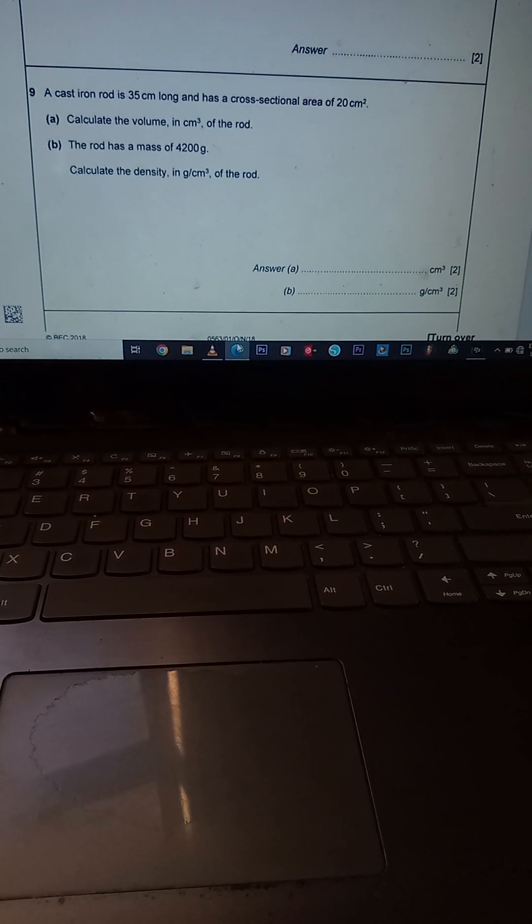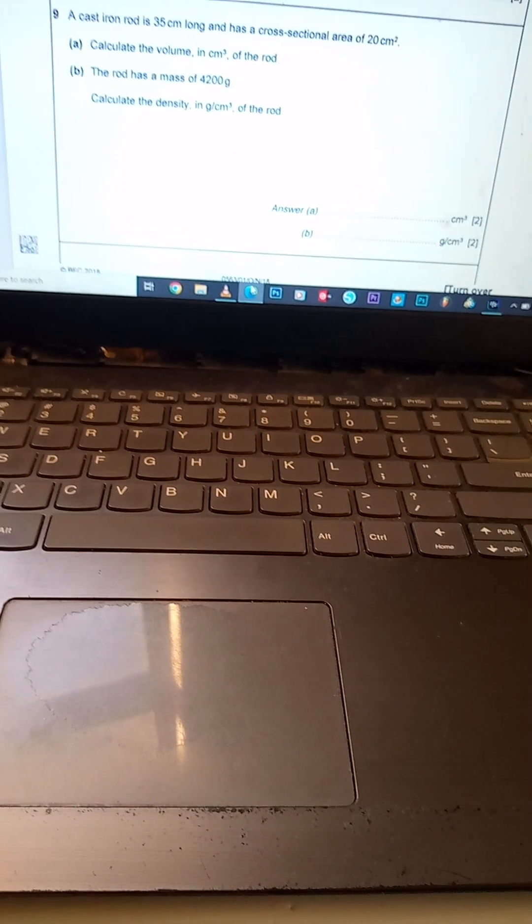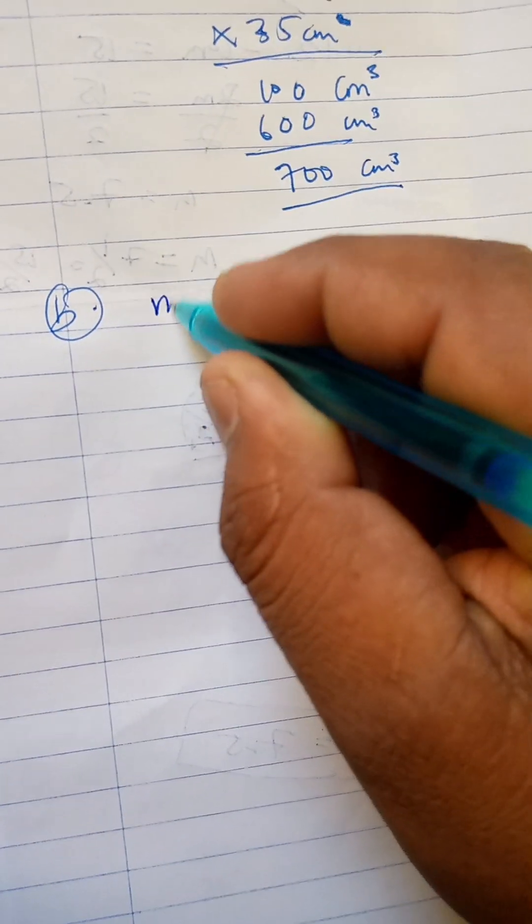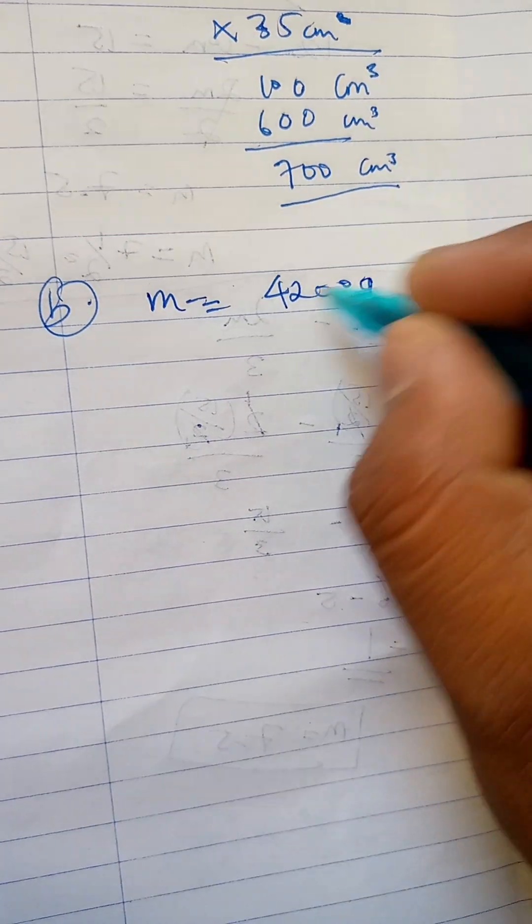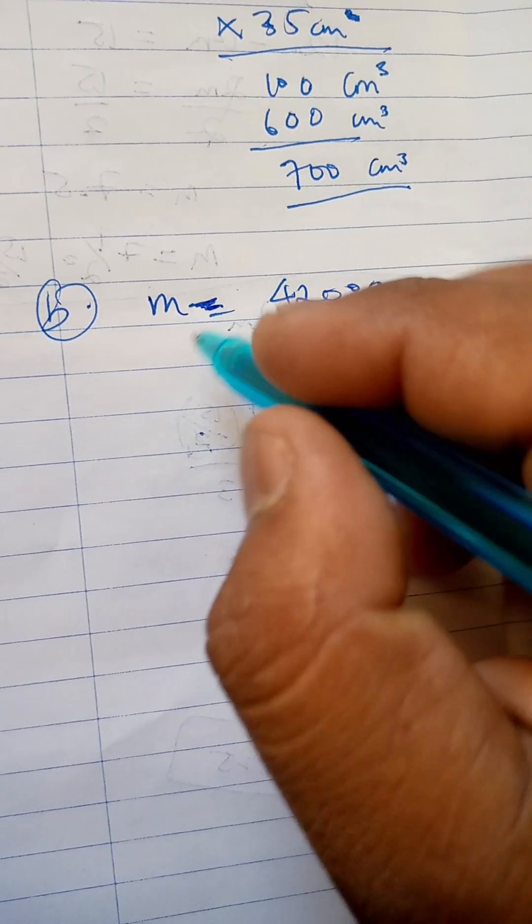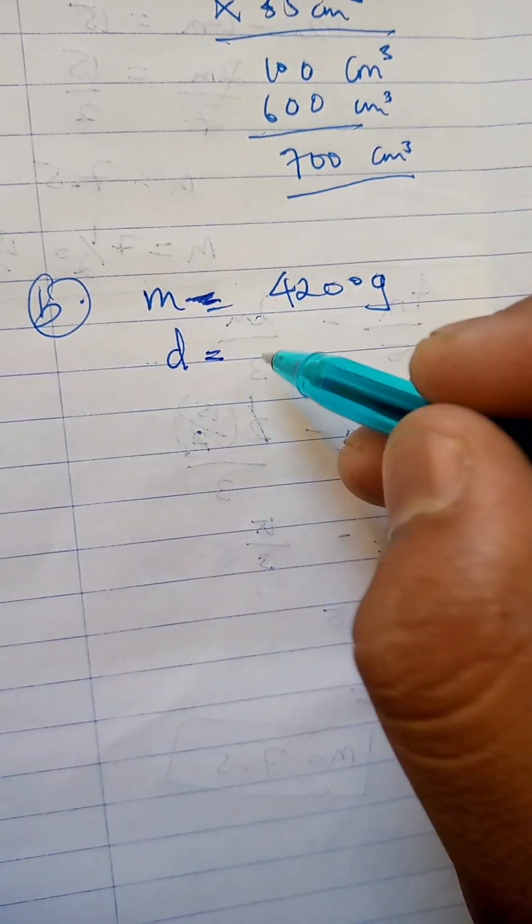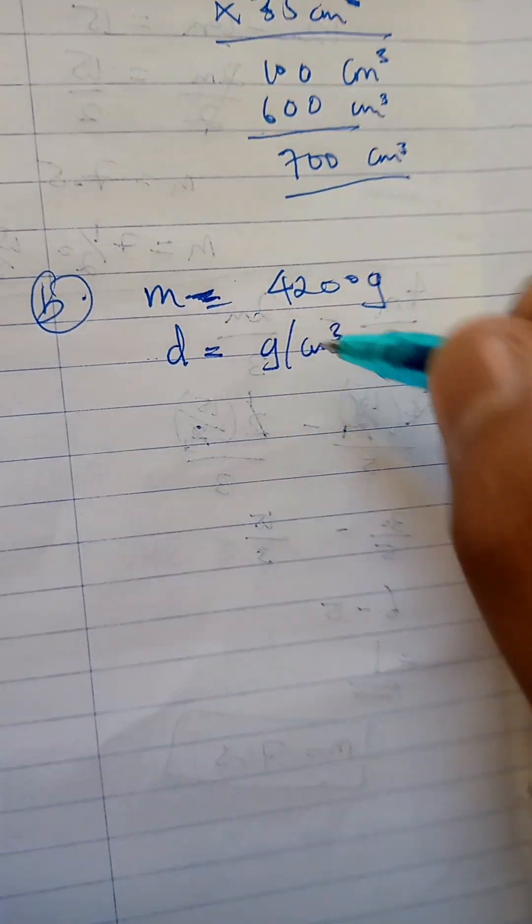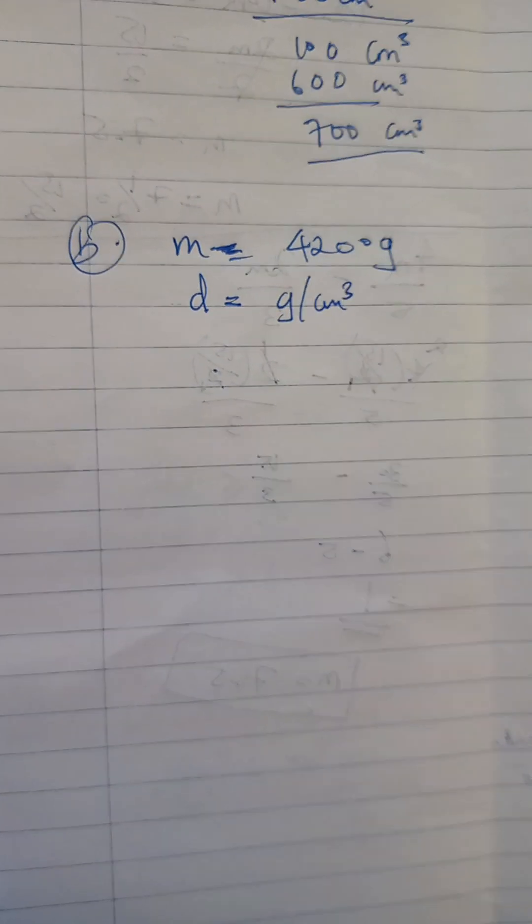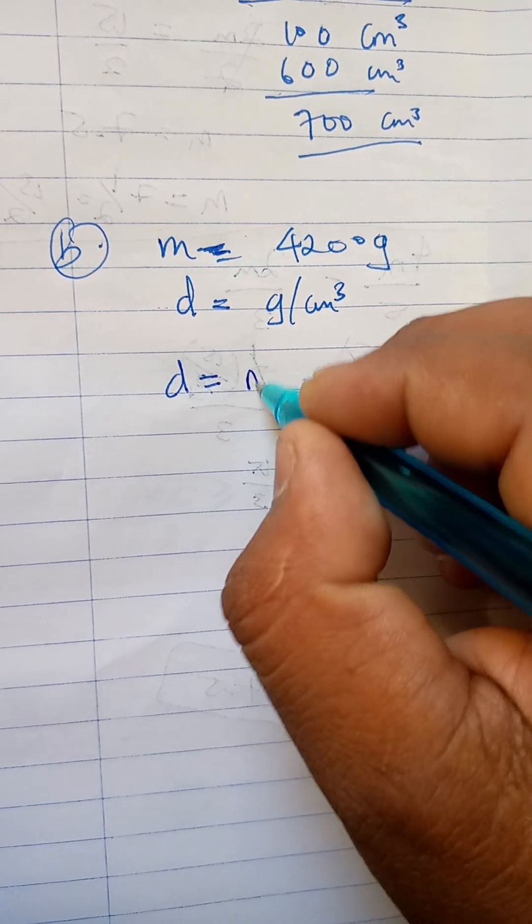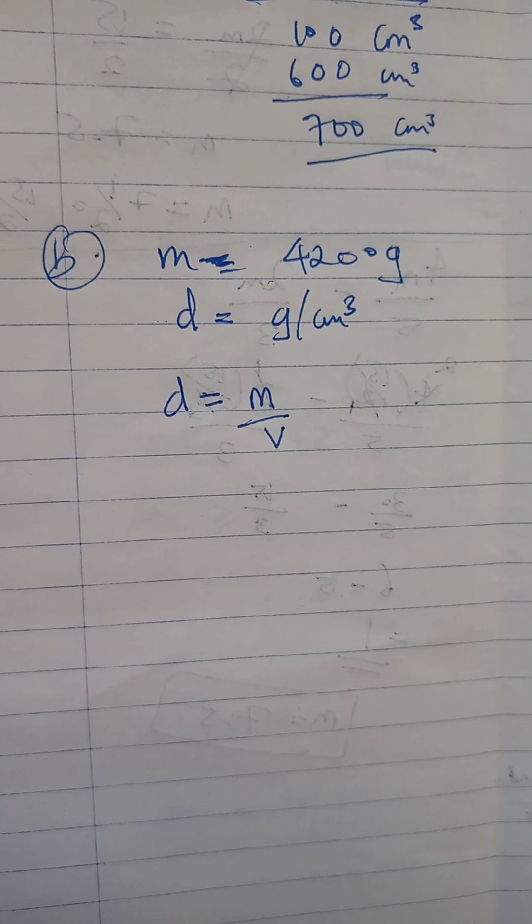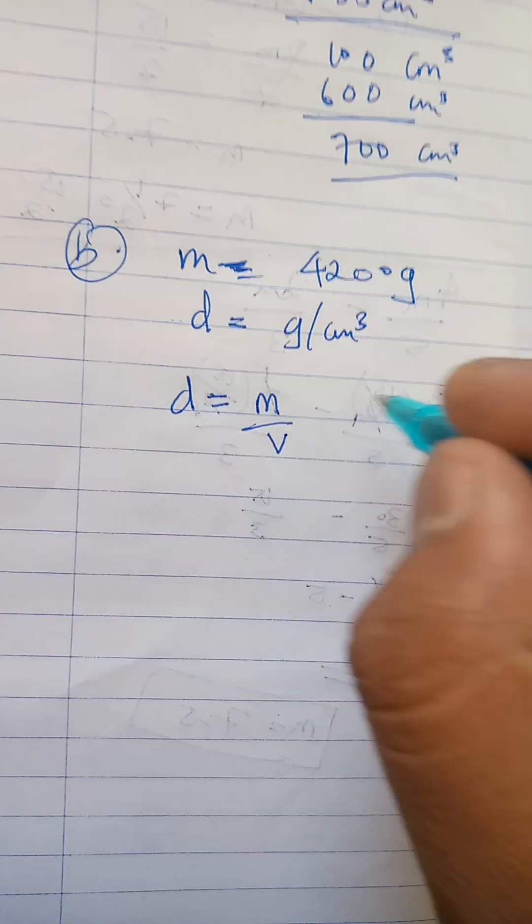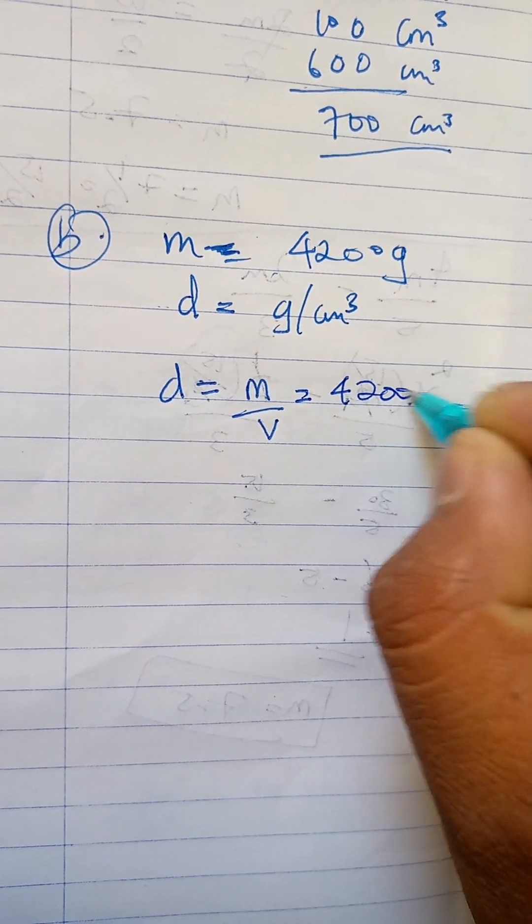Calculate the density in grams per cubic centimeter of the rod. Now it says the mass is 4200 grams, right? And the density is in grams per cubic centimeter. Now we know that density equals mass over volume, right? We remember, right?